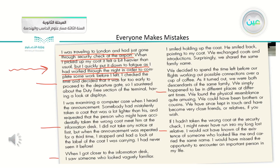After that, he started talking about what happened to him — here starts the story. We have more details. When he got closer to the information desk, he saw someone who looked vaguely familiar. He smiled, holding up the coat. He found out that he had mistaken his coat with someone else's coat. Then he talked about the result of his mistake: that he met someone who is one of his cousins. After that, in the last paragraph, you talk about the lesson behind this mistake. He said: 'If I hadn't taken the wrong coat at the security check, I might never have run into my long-lost relative.'